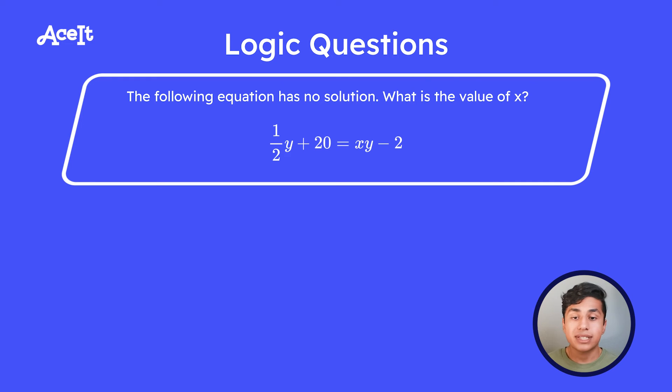So the only number that would work in this case is one half. And this is because there's no such value of y that one half times that number plus 20 is going to be the same thing as one half of that number minus 2. So we know in this case the answer is x equals one half.